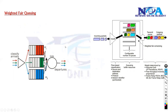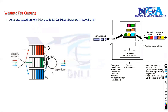Basically, fair queuing is an automated scheduling method. It is a dynamic method where it will dynamically create its own queues — like Q1, Q2, and Q3. These queues are dynamically created based on the traffic flows, and it provides fair bandwidth allocation to all the queues and all the network traffic.